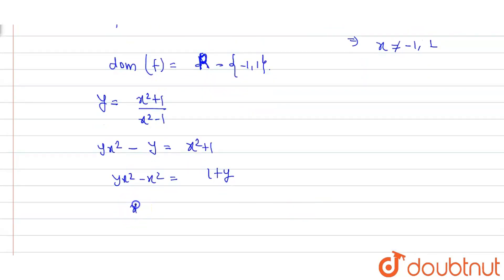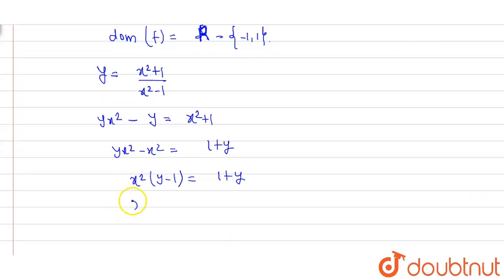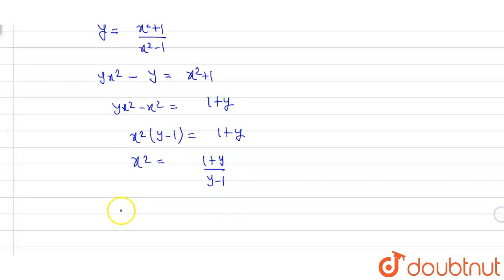This means y x square minus x square equal to 1 plus y. So, x square, here is that y minus 1 is equal to 1 plus y, so x square equals 1 plus y upon y minus 1.